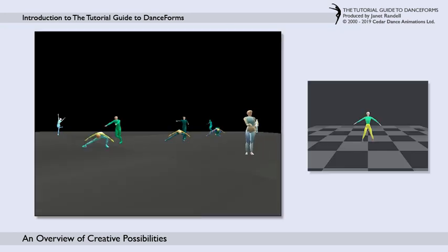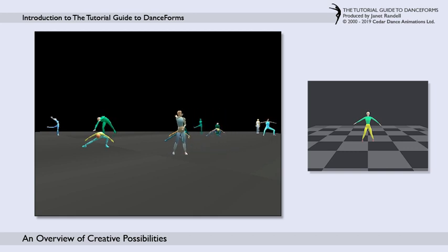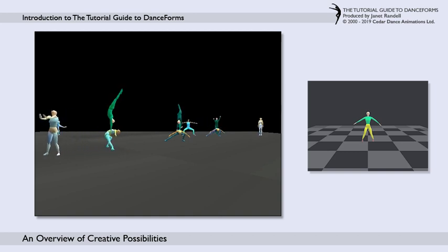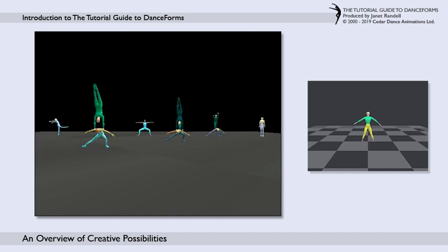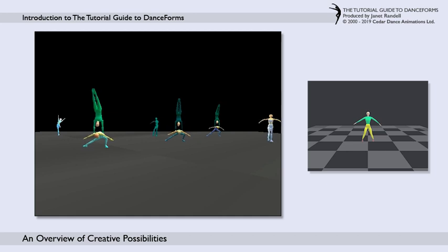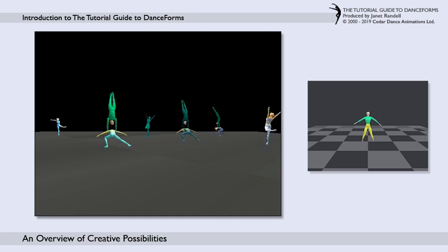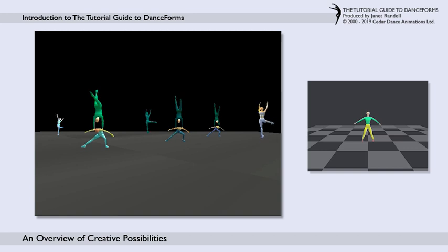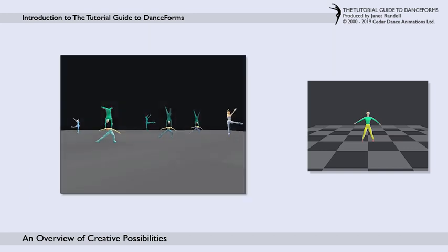You can experiment with a more abstract and expressionistic approach to choreography and create filmic types of movement which would not be possible on stage. This is an extract from a working version of the dance Parallel Asides, choreographed by Randall, demonstrating an improvisational alternative partner work sequence.